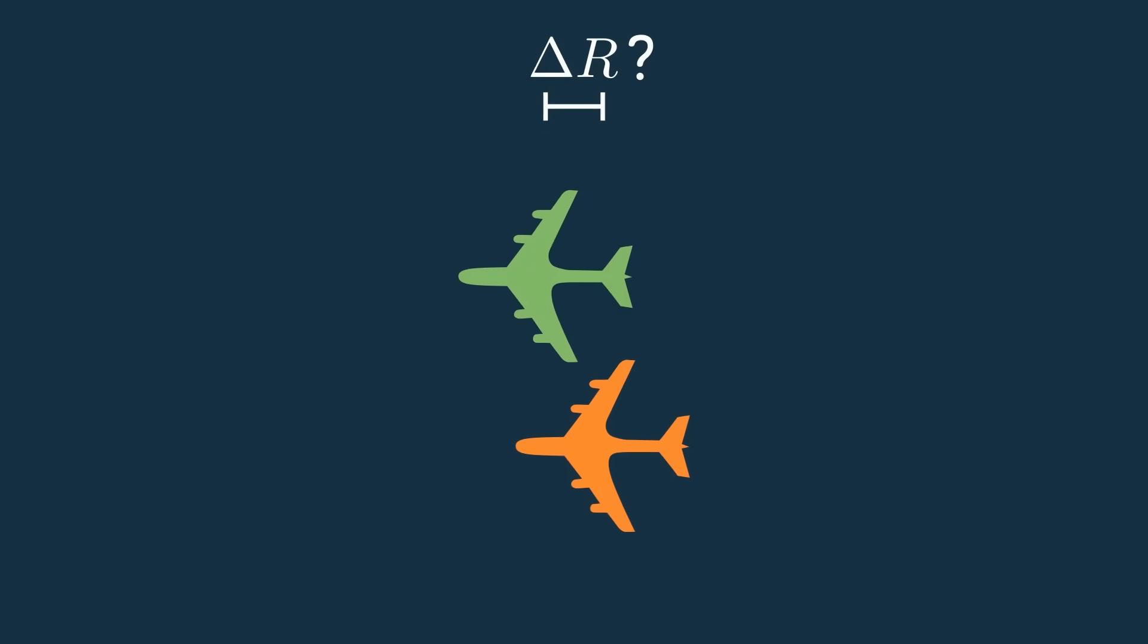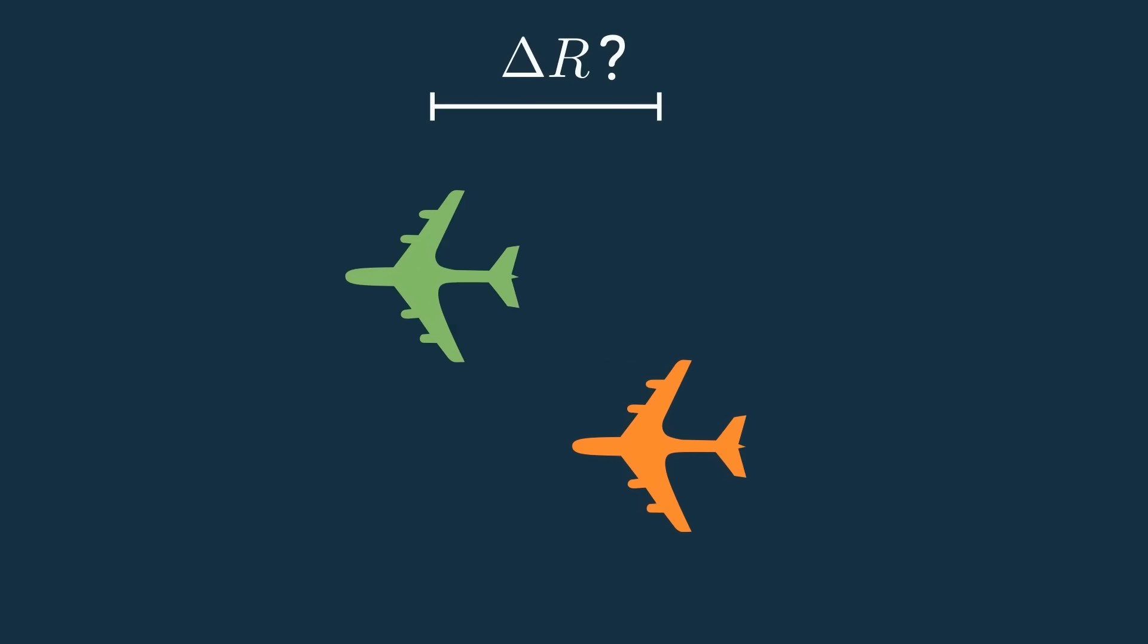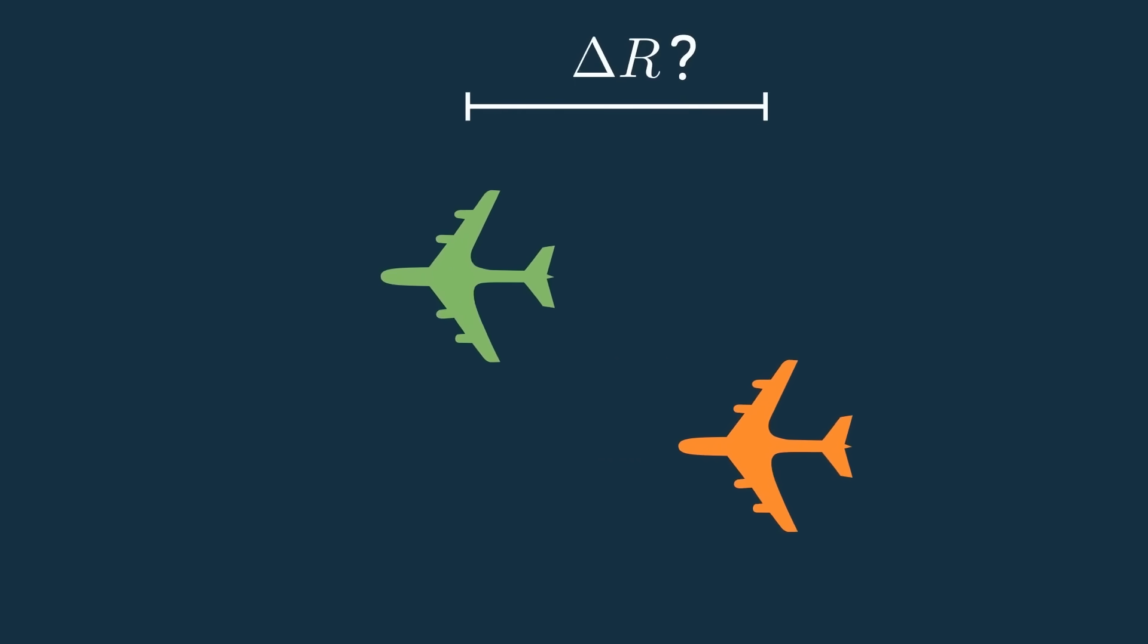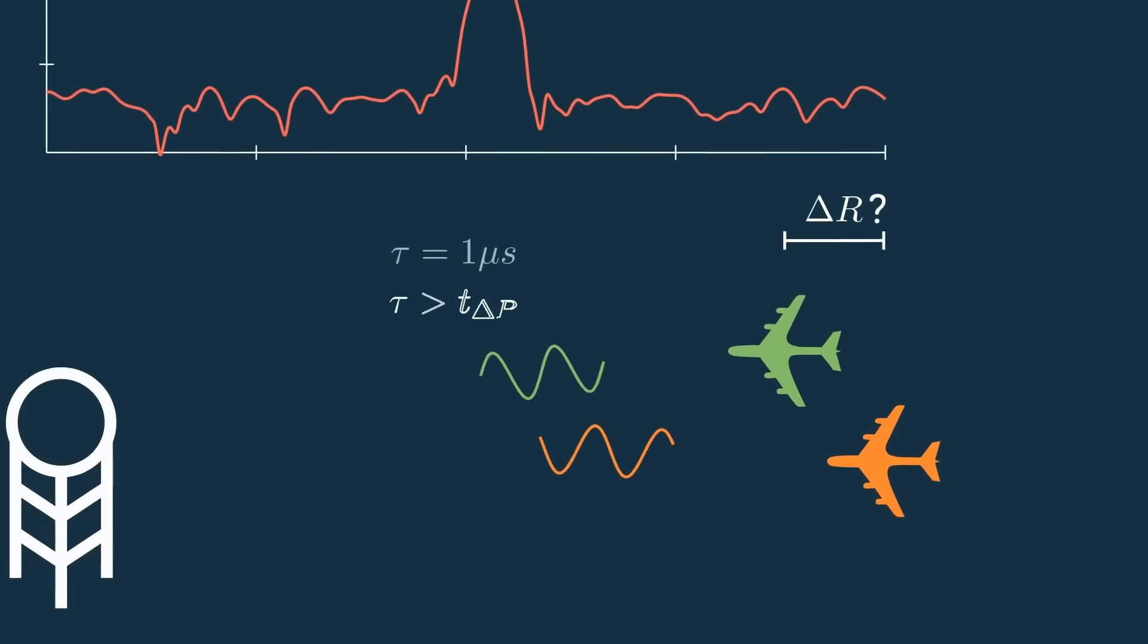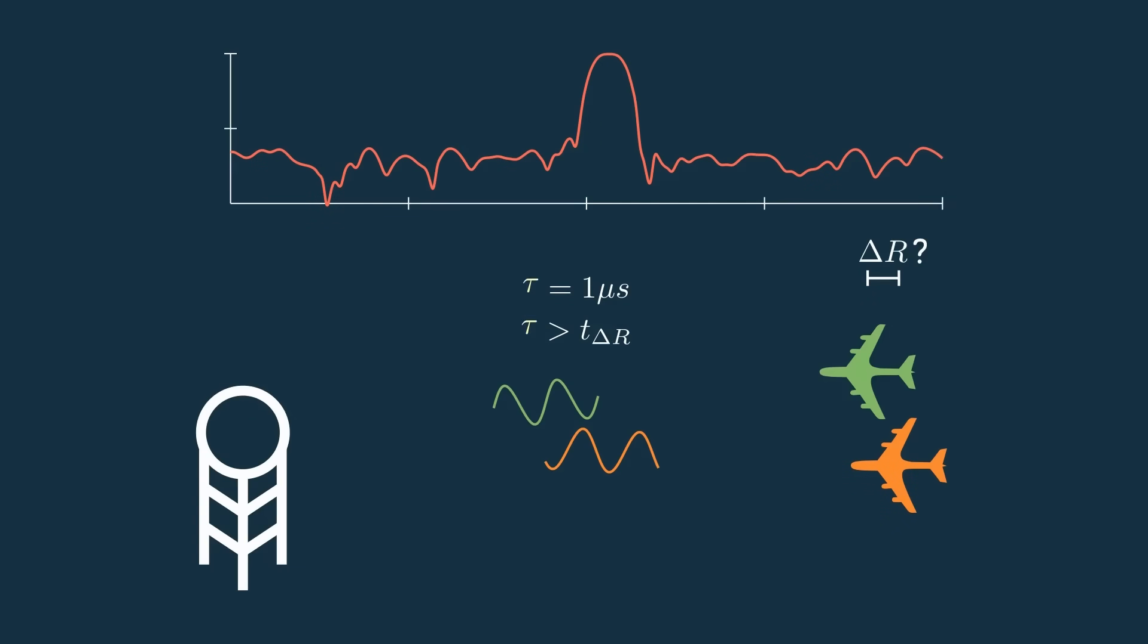The range resolution is the minimum range between targets needed to be able to precisely differentiate between them. But how do we determine this range resolution? Well, as we saw, to not see this overlap, we want this pulse width tau to be less than the time it takes to get from target 1 to target 2 and back.